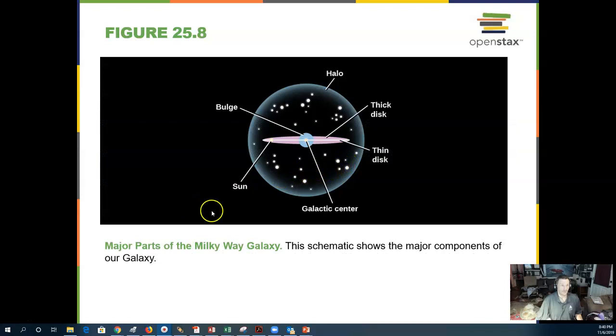Other parts of the galaxy: the galactic center, bulge around the center, the thin disk, and halo where the globular clusters reside.